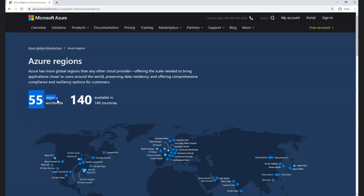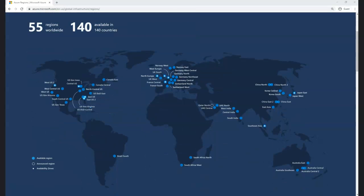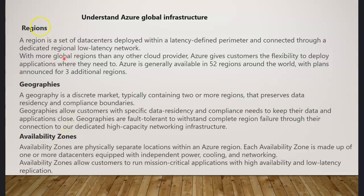Let's understand some more terminology specific to Azure's global architecture. A region is a set of data centers deployed within a latency-defined perimeter, connected via dedicated low-latency networking. Microsoft Azure is generally available in 52 regions worldwide, with plans to announce three more additional regions — as of the recording in January 2020.